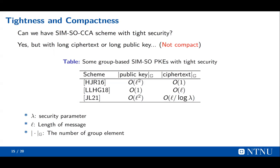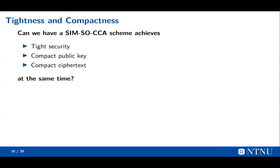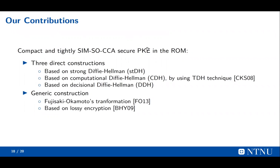The drawback is that non-compact PKE schemes have very high communication overhead. In this work, we want to solve this problem. Can we have a SIM-SO-CCA scheme that achieves tight security, compact public key, and compact ciphertext at the same time? We found this problem is very hard, so we relax the requirement to the random oracle model. Our paper gives a positive answer: we propose three direct constructions and a generic construction, all of which are compact and tightly SIM-SO-CCA secure in the random oracle model.